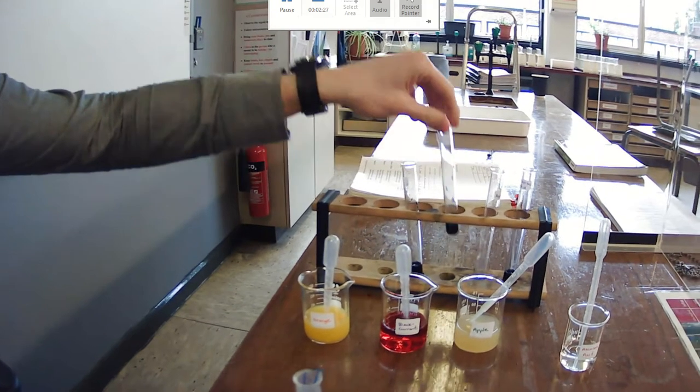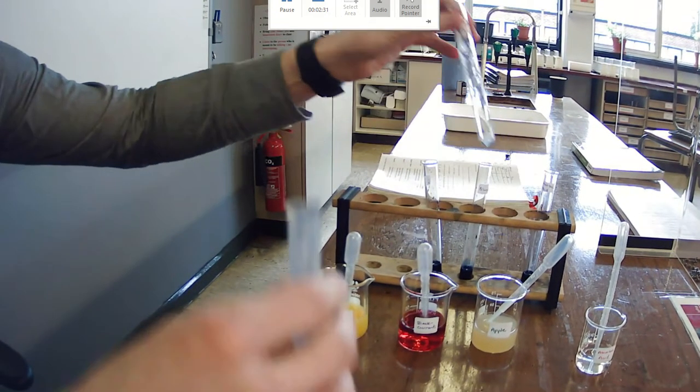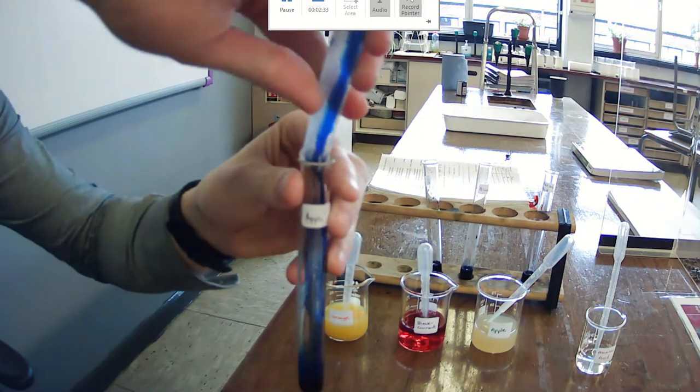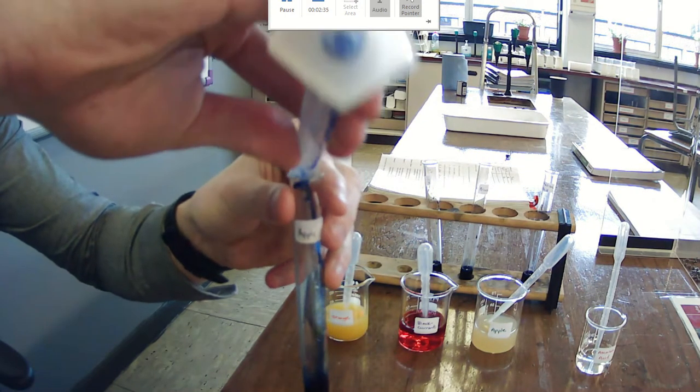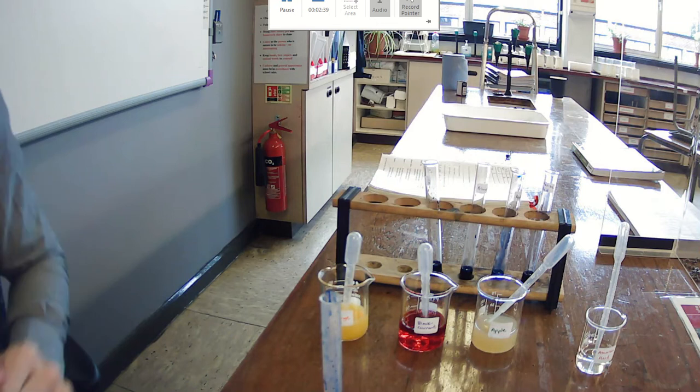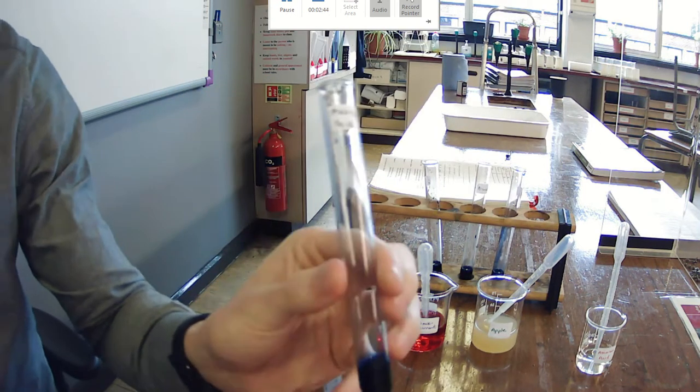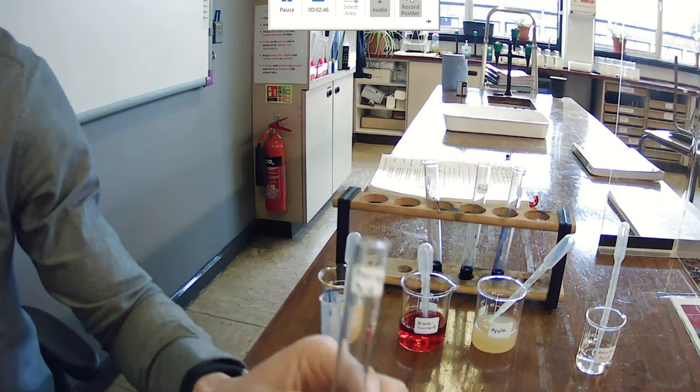Now we already have three test tubes filled with DCPIP, so we've just got one more to fill up. And then we can start our experiment. So four test tubes, we choose one to start with, which is ascorbic acid, as this is pure vitamin C.